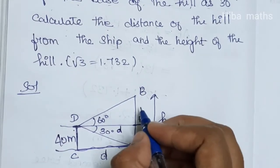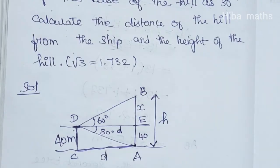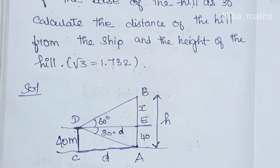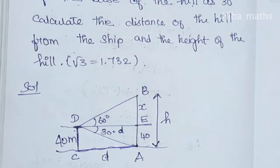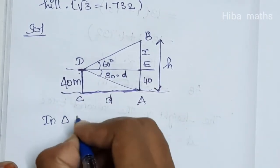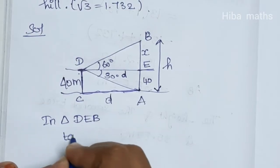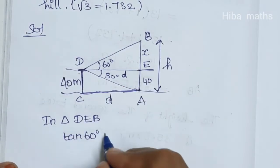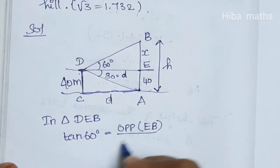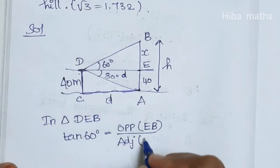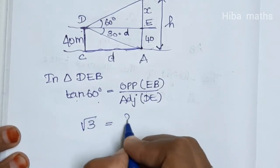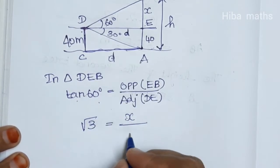The opposite side CD is equal to 40. Using triangle for the elevation angle: tan 60 degrees is equal to opposite over adjacent, where opposite is EB and adjacent is DE. So tan 60 equals EB divided by DE, which gives x over D.